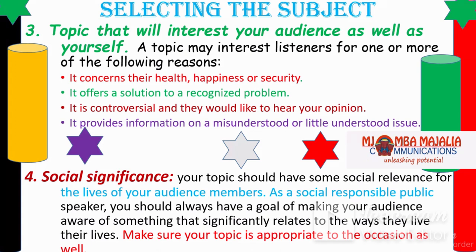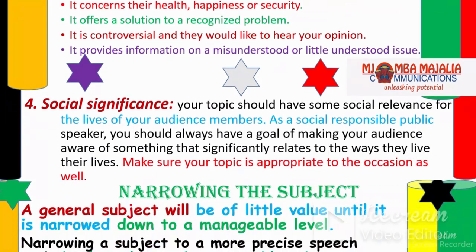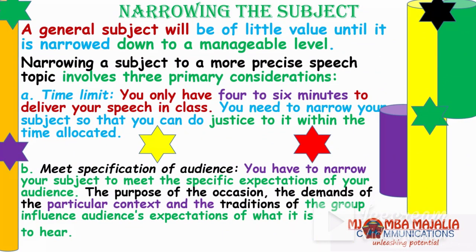Many people in public speaking actually address themselves — they even laugh at their own jokes while the audience wonders what is wrong. Many topics interest audiences when they touch on health, happiness, security, or offer a solution to a recognized problem. For example, telling people about an easy remedy for COVID should interest your audience. Also consider controversial topics. Finally, your topic should have social significance — some social relevance for the lives of your audience members. Consider those four criteria when selecting a topic.